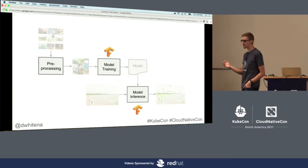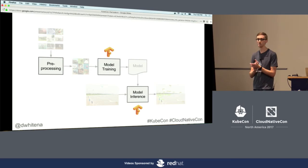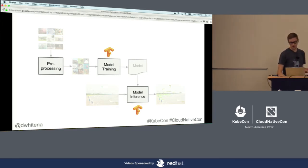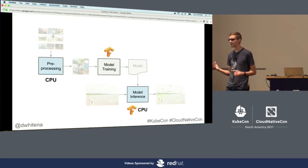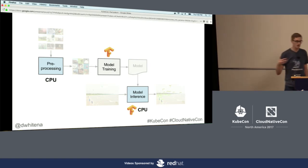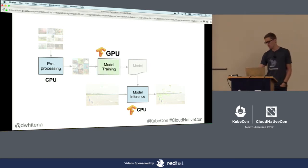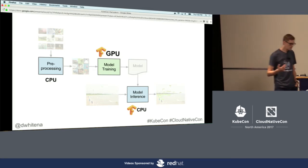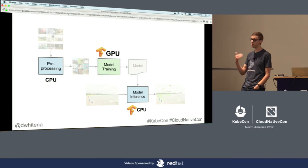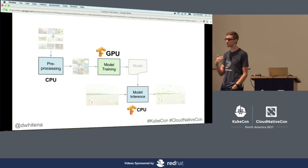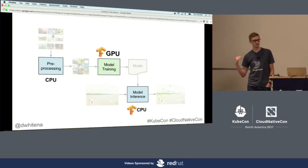Most of the time, people utilize GPUs for model training, as mentioned in the previous talk. So in our workflow, we actually have two stages that will run just fine on CPU nodes — all of our pre-processing and inference — and then one stage we want to run on a GPU node. This is pretty essential for teams building models at large scale who need to interface GPU training with all the other stages.